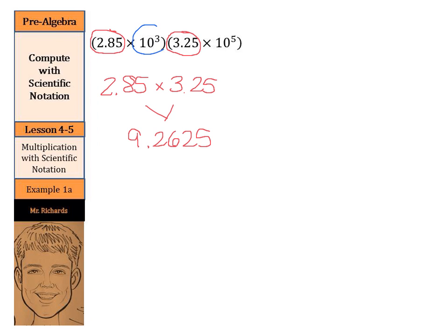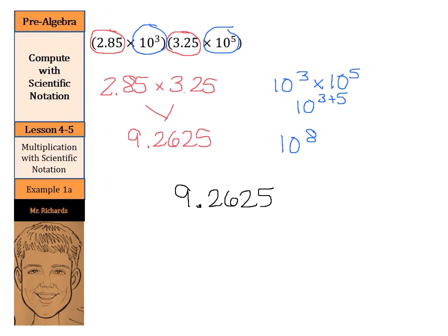Next, we have 10 to the 3rd and 10 to the 5th, so let's multiply those together. Using our power rules, we can add the exponents, so we end up with 10 to the 8th. Our final answer is 9.2625 times 10 to the 8th. Multiply the factors, deal with the powers of 10 by adding the exponents, and combine them.